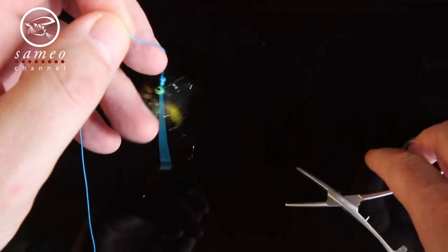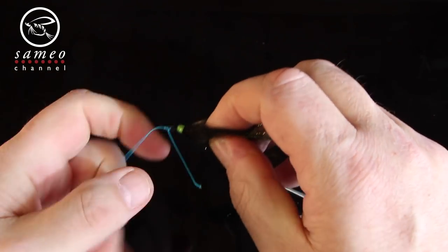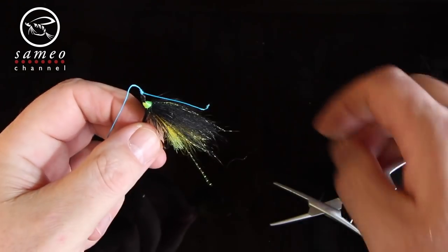Wet the knot and tighten it. Now you use the nippers to trim the excess.